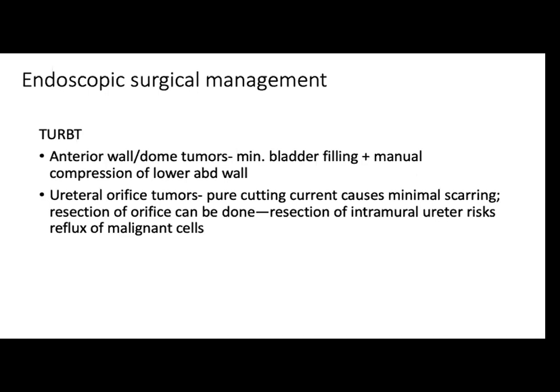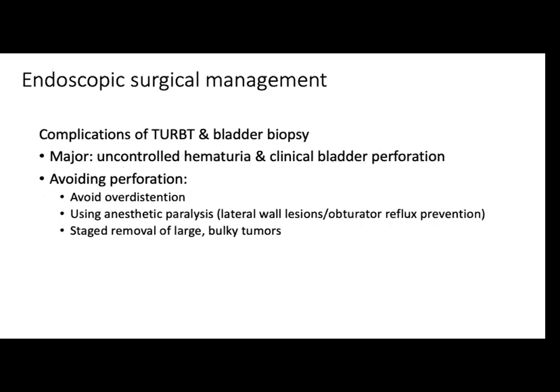For grossly muscle-invasive tumors, make sure to do a biopsy of the border and base to establish invasion. Complications of TURBT and bladder biopsy include uncontrolled hematuria and clinical bladder perforation. To avoid this, avoid overdistension. Use anesthetic paralysis for the obturator reflex and staged removal for large bulky tumors. Perforation can be extraperitoneal or intraperitoneal — extraperitoneal is treated with prolonged catheter, but intraperitoneal may require open or laparoscopic surgical repair.